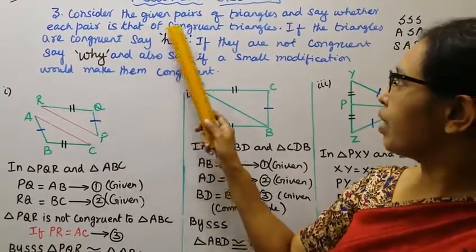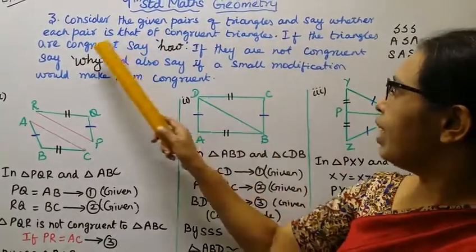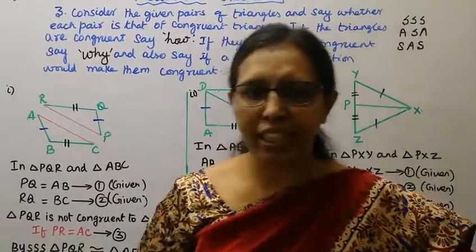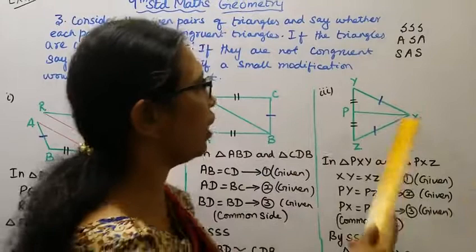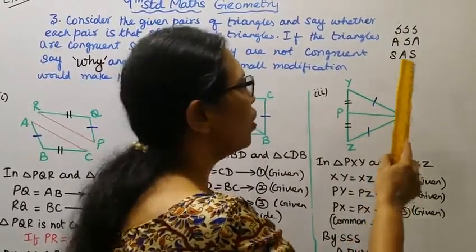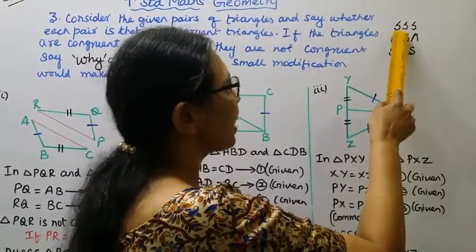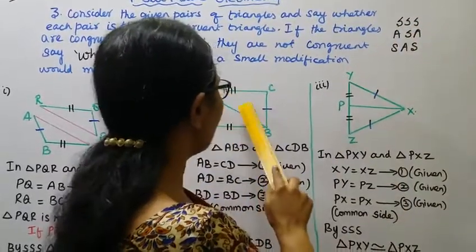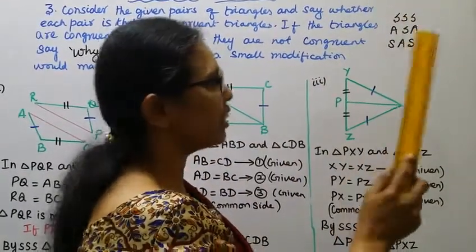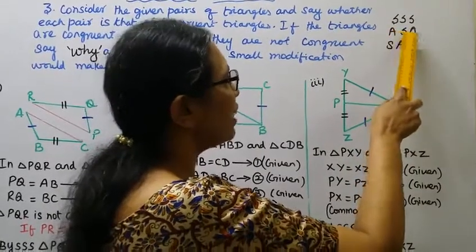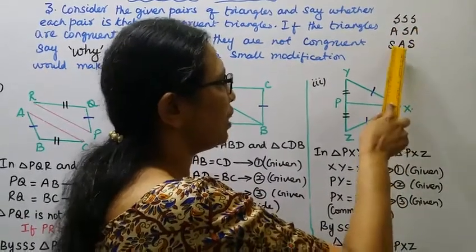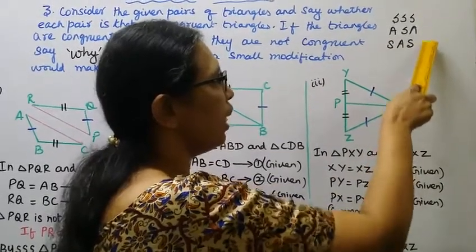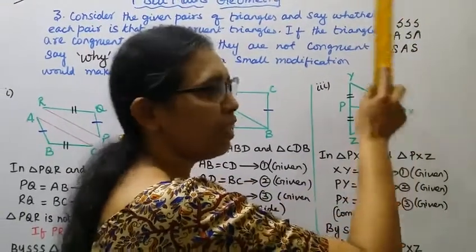Consider the given parts of triangles and determine whether each part is congruent or not. The simple conditions are side-side-side and angle-side. In our own property, when we satisfy the condition, we are going to connect the criteria.